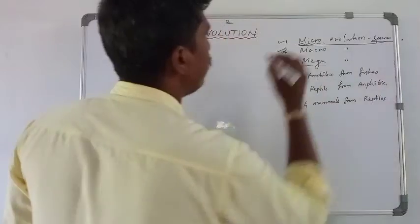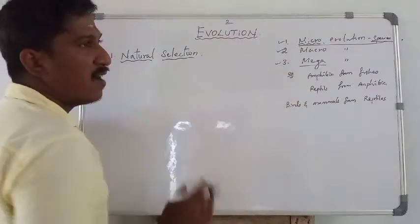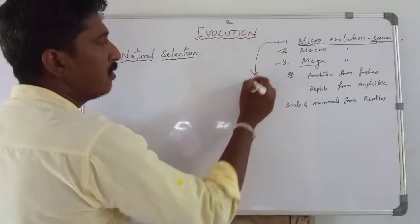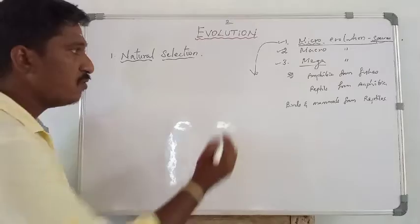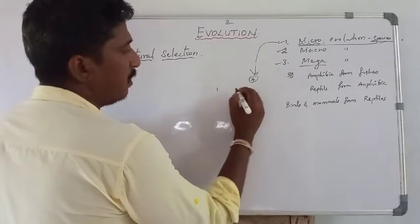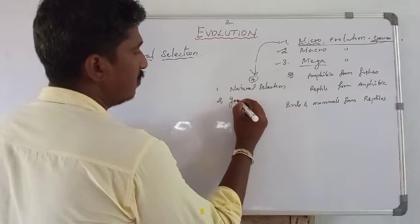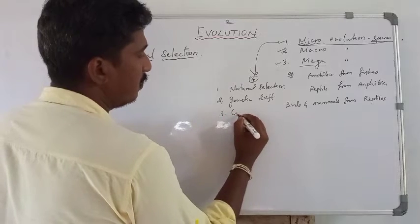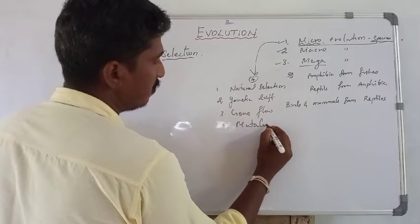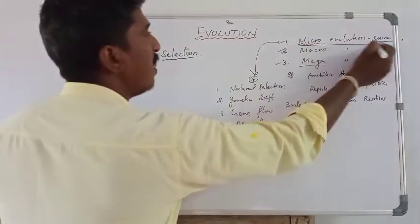Micro evolution operates at species level and it makes changes in the allelic frequency of a population. It has four important forces to change the allelic frequency: the first one is natural selection, the second is genetic drift, the third is gene flow, and the fourth is mutation. These four are vital forces that involve micro evolution.